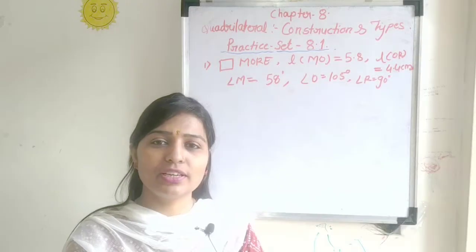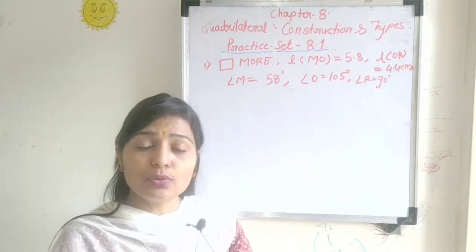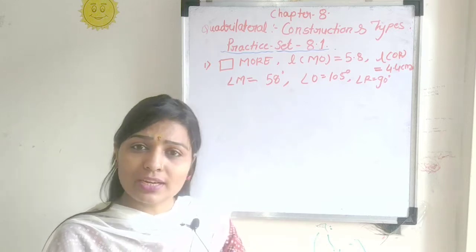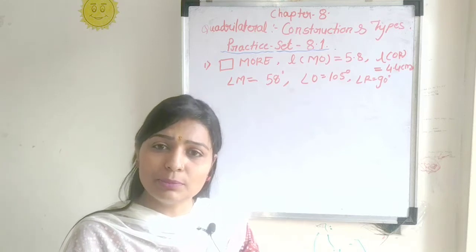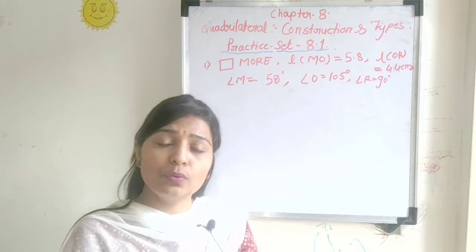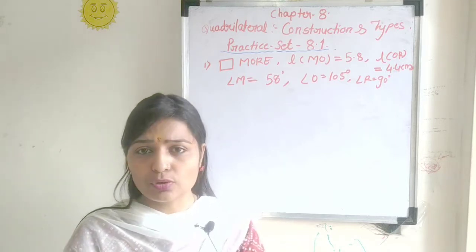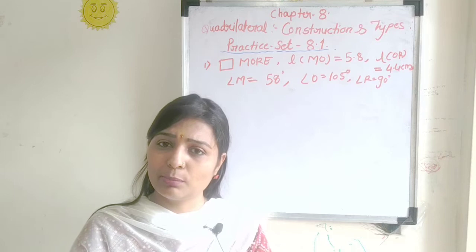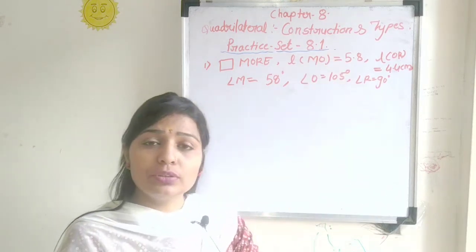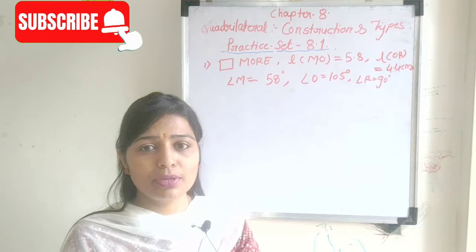Hello friends, welcome back to my channel at Masters Learning. Today we are going to see Practice Set 8.1. In this video, we have drawn the quadrilateral and its types. There were 4 conditions in the quadrilateral — 3 sides and 1 diagonal, or 2 sides and angles. If you haven't seen that video, you can see the link button. We will solve the questions in the textbook. Please like and share. Let's start today's video.